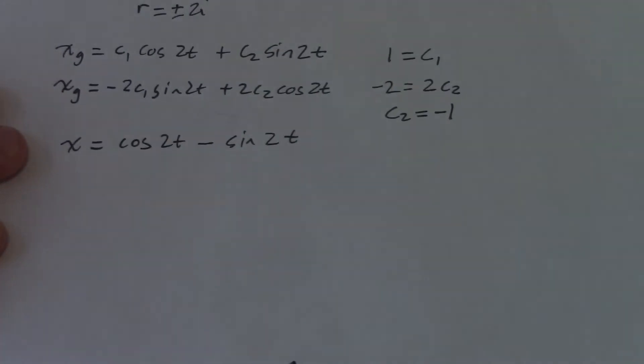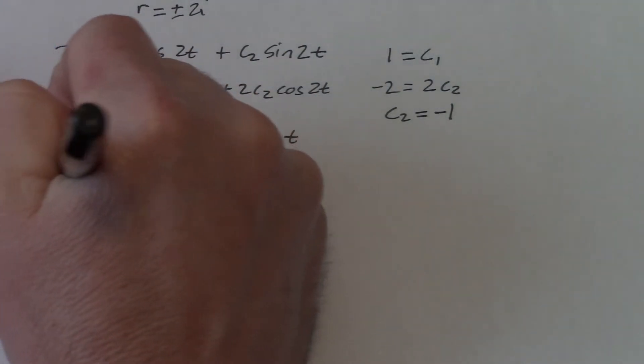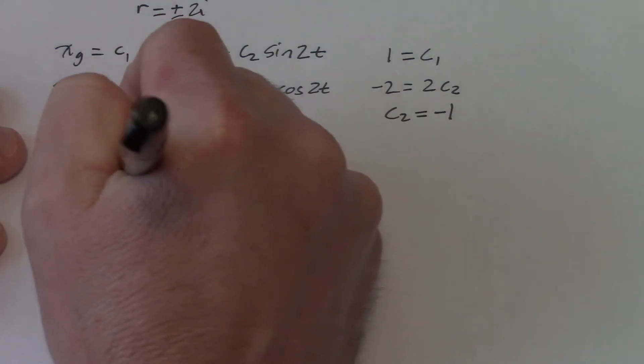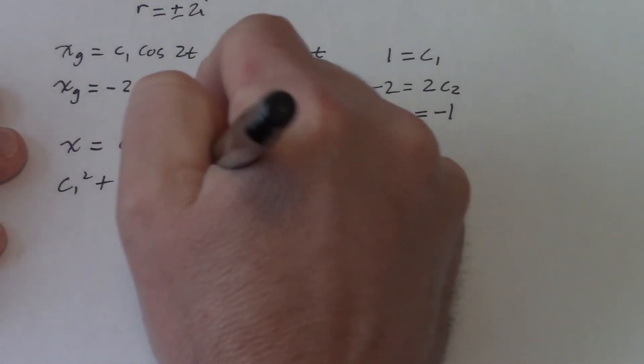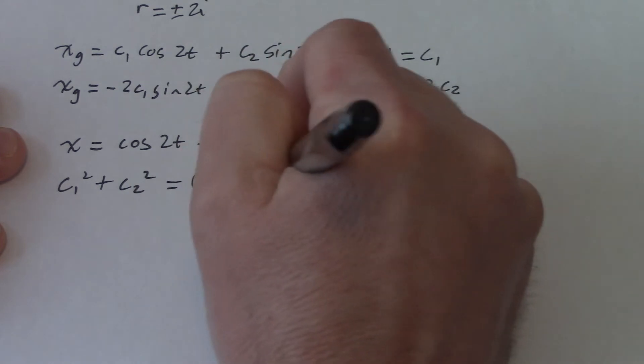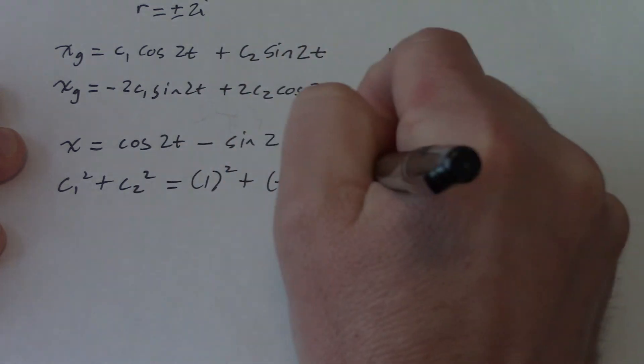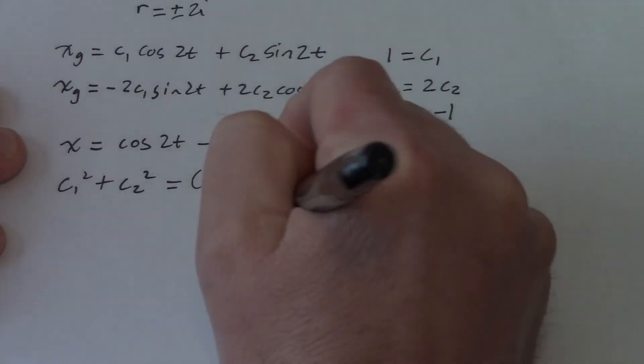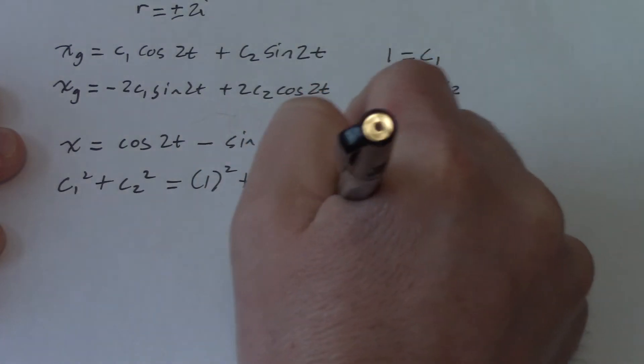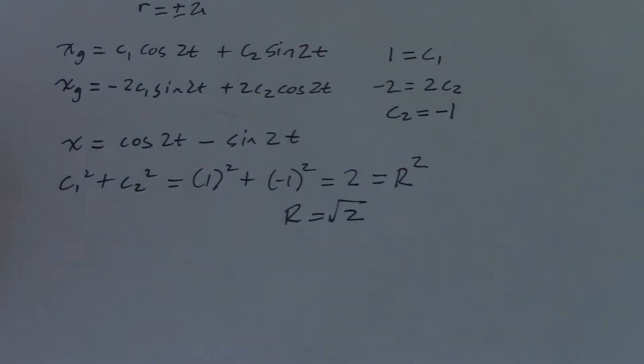All right, so to find r, C1 squared plus C2 squared is 1 squared plus negative 1 squared. That's 2, and that's r squared. So r equals root 2.